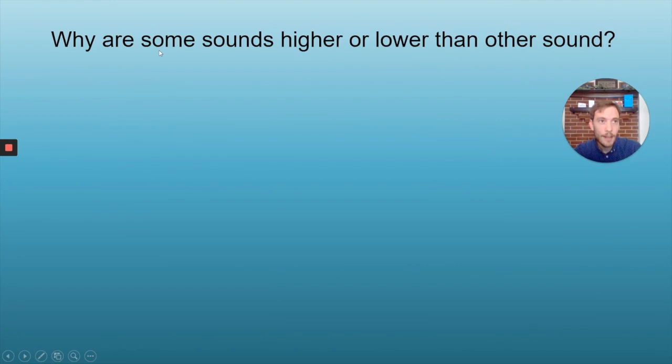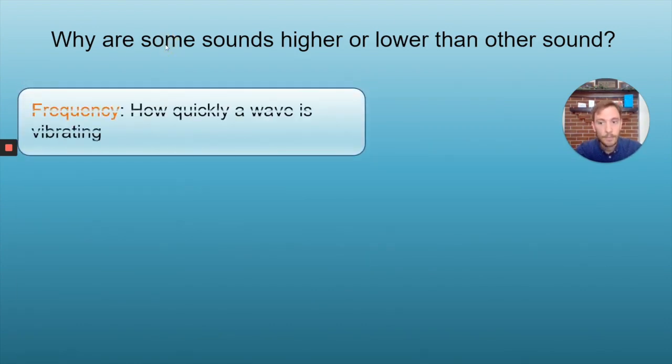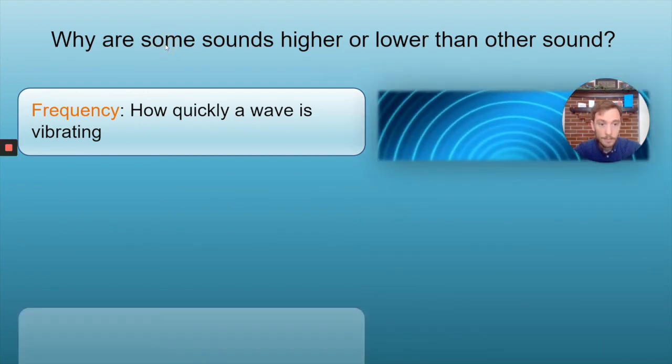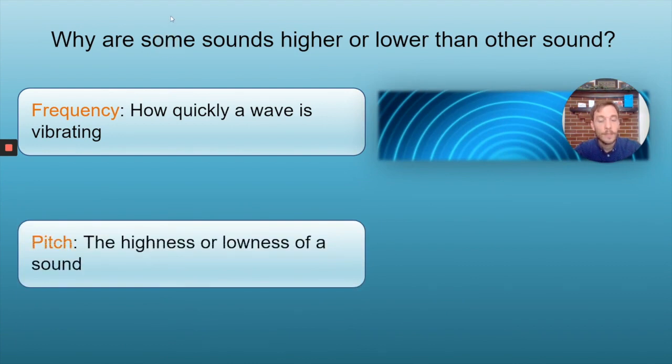Sounds can have other qualities than just being loud or quiet. Some sounds are just higher or lower than other sounds, but what causes this? The highness or lowness of a sound has to do with the frequency of the wave that produces the sound. Frequency has to do with how quickly a wave is vibrating. The frequency of a wave causes the pitch or the highness or the lowness of a sound.